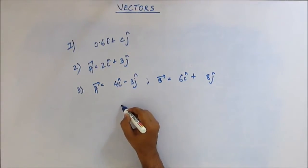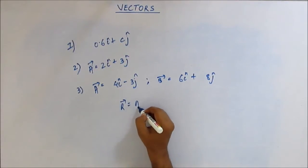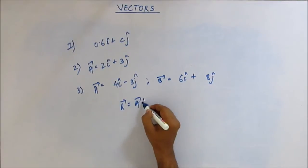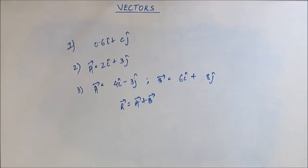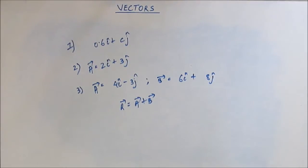Suppose the resultant vector R = A vector plus B vector. Give me the magnitude of R vector and give me its direction. Work it out mentally — this is pretty simple. Come on.